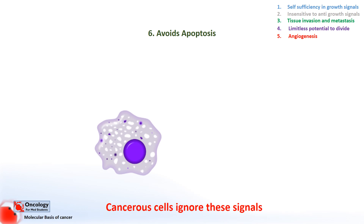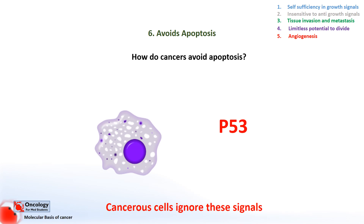The ways cancers avoid apoptosis is very complex and involves many proteins, but if you had to pick the most important one you'd have to say it's P53. P53 is known as the guardian of the genome, and for good reason — it's the protein most highly involved in activating apoptosis in cells with damaged DNA, and one that you'll hear about frequently in relation to cancer.